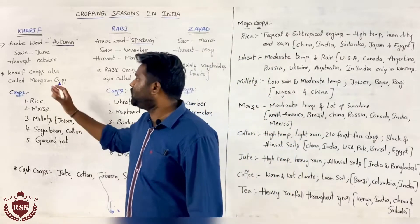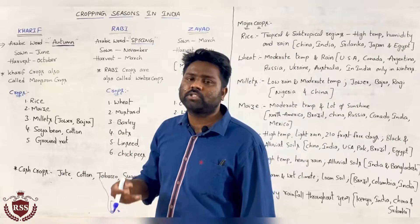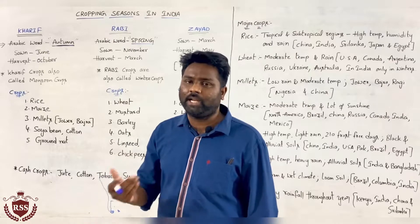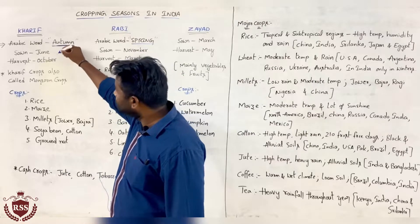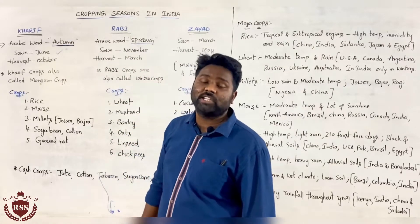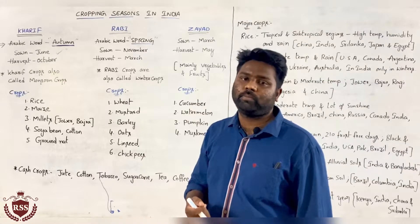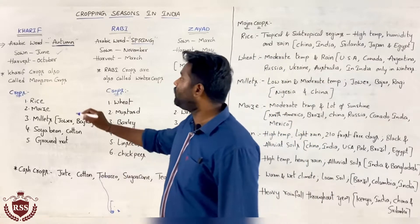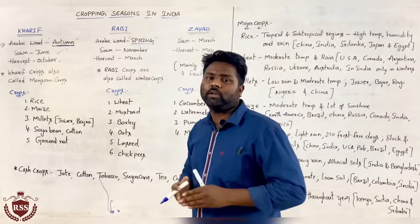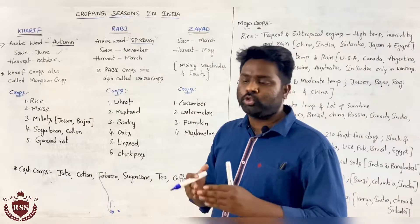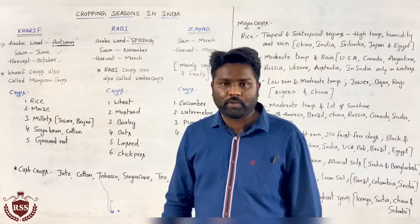In the Kharif season, we are sowing the seeds — putting seeds into the field is called sowing. At the month of June we are sowing the seeds, and harvesting means after completion of the crop, we are taking out the crop. At the month of October we are harvesting. So the period from June to October is called the Kharif season.